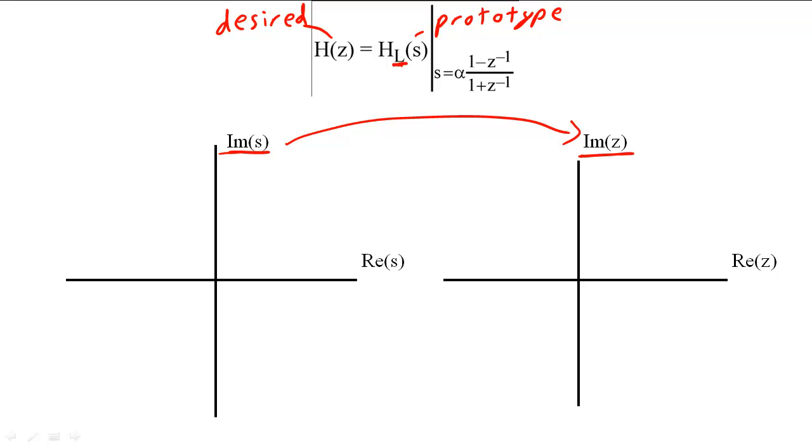We compute this mapping with the bilinear transform. When we apply the bilinear transform, we find that points on the imaginary axis on the S-plane map to points on the unit circle on the Z-plane.